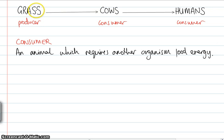Humans, we either need the cow for meat or we could even need plants, not necessarily grass, but we are consumers as well.